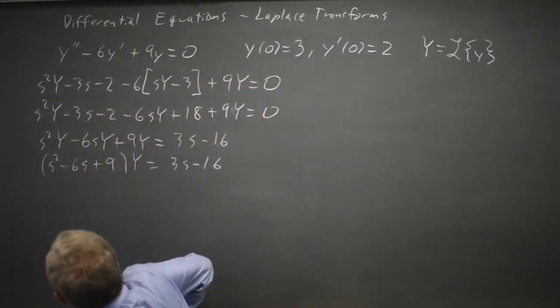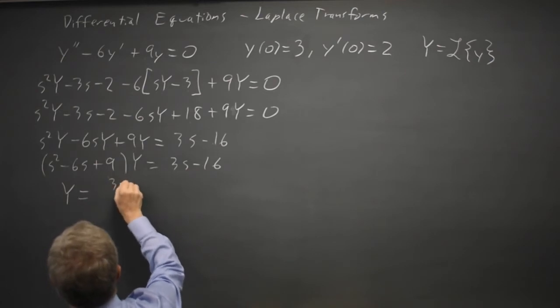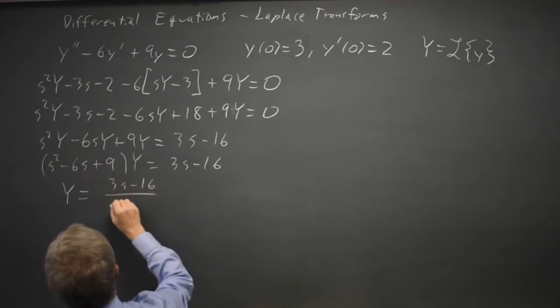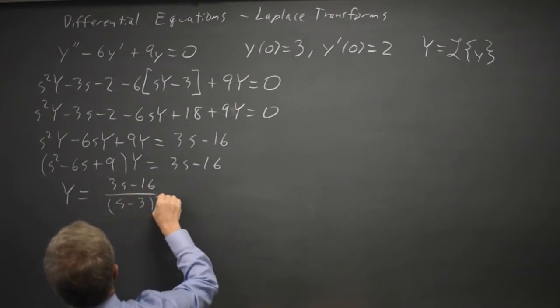Now I solve for uppercase Y which is the transform of the solution and that is 3s minus 16 over s minus 3 quantity squared.